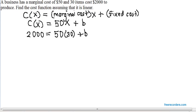When x is 30, c of x is $2,000. So, on your calculator, multiply 50 times 30, you'll get $1,500.